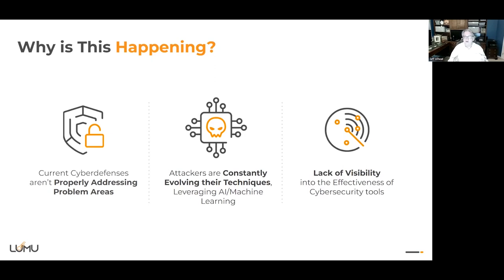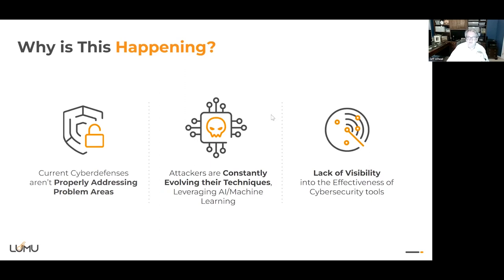Attackers are constantly evolving their techniques. Two years ago at RSA you hardly saw any API security platforms — now you're seeing them everywhere because the attackers moved to a new attack surface. They're always going to move. You close the door, they go through a window. You close the window, they make a hole. They're financially motivated and doing it at machine speed. The lack of visibility is huge — you can't hit what you can't see. You can't defend your front porch if you can't see what's going on out there.